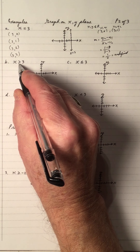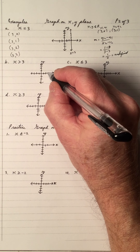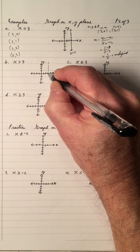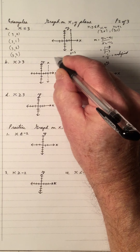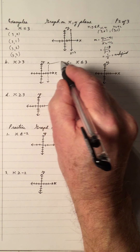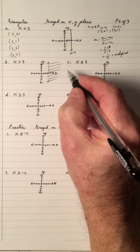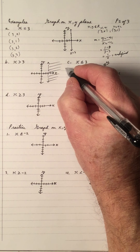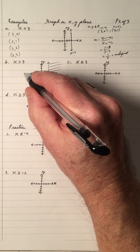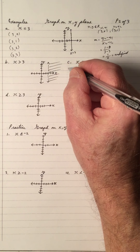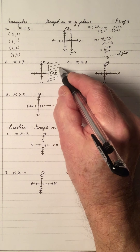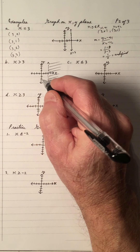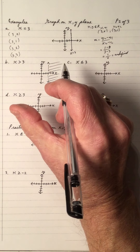The boundary line is x equals 3. There's no equal sign in x greater than 3, so the boundary line is vertical and broken. In relation to the vertical line, greater than is on the right. Remember, for y, greater than is above and less than is below, but in relation to a vertical line, right is greater and left is less than. All x coordinates of the points on the right will be greater than 3.